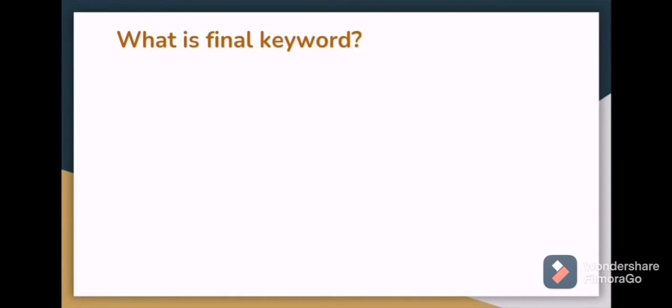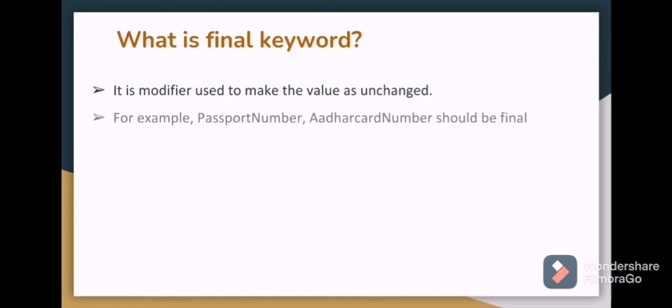What is final keyword? Final means something that cannot be changed. In Java it means it is a modifier used to make the values unchanged. For example, we can take passport number or Aadhar card number, these things we can make as final so it cannot be changed.